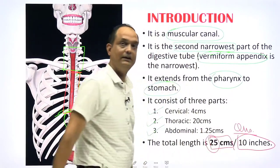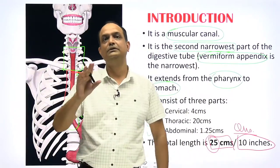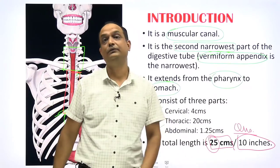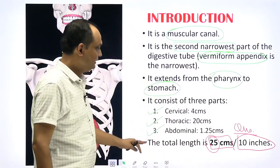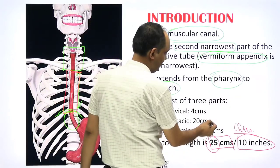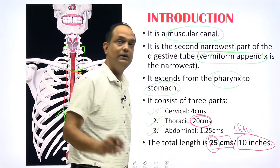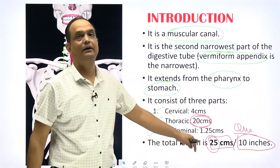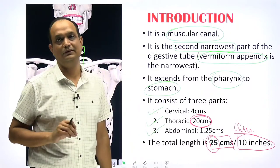This is a very frequently asked exam question. The thoracic part is the longest part, around 20 centimeters long, and the smallest part is the abdominal part, which is only 1 to 2 centimeters long.